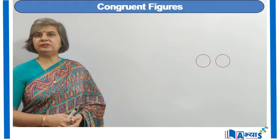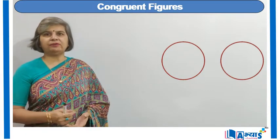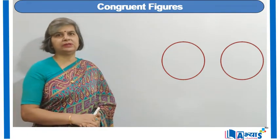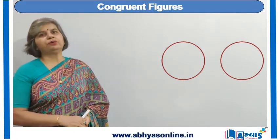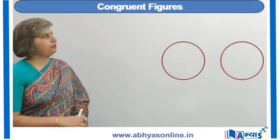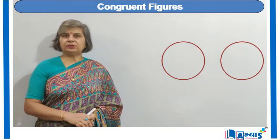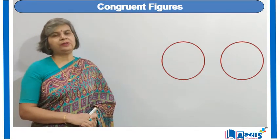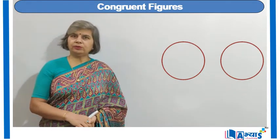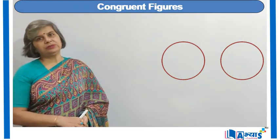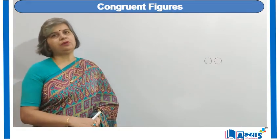Similarly, if we have two circles with the same radius — that means both the circles have equal radius — and if we try to cut one circle and place it over the other, it will overlap it completely. That means the two circles are congruent to each other. So, whenever we have congruent figures, if we cut one figure and place it on the other, it will superimpose on it completely.